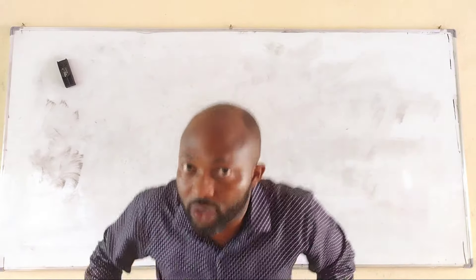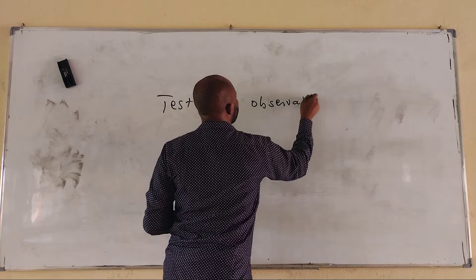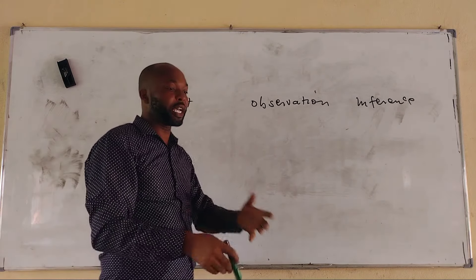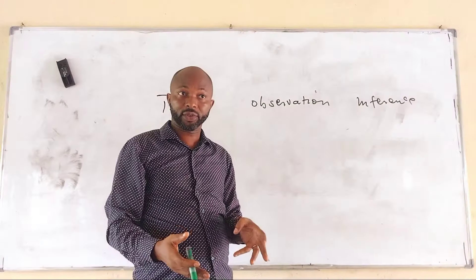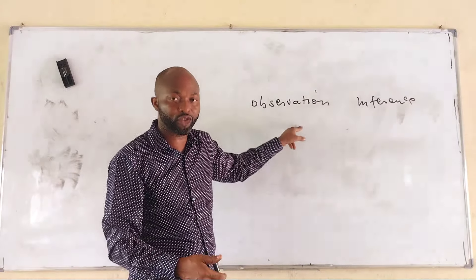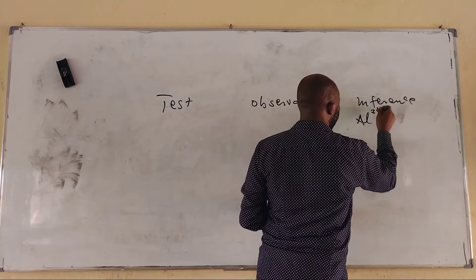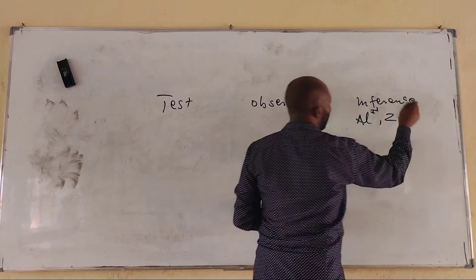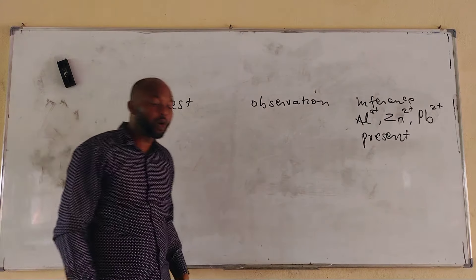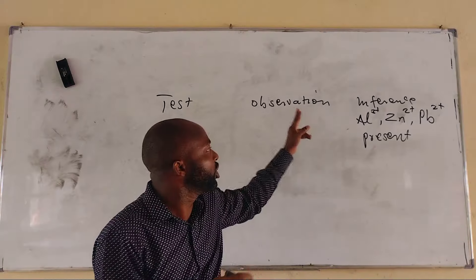The format is going to be: Test, Observation, and Inference. In the test column, for example: Sample A plus sodium hydroxide in drops, then in excess. The observation is: white gelatinous precipitate in drops, which is soluble in excess. My inference would be: Al³⁺, or Zn²⁺, or Pb²⁺ present — because from what we've discussed, we know the observations for these cations.